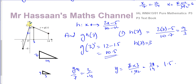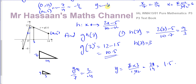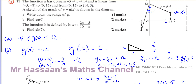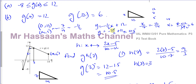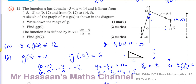An alternative method: find the equation of the line through (0, 12) and (14, 5). The gradient is (5 - 12)/(14 - 0) = -7/14 = -½. So the line is y = -½x + 12. Substituting x = 3 gives y = -1.5 + 12 = 10.5, and substituting x = 12 gives y = -6 + 12 = 6, confirming both earlier answers.